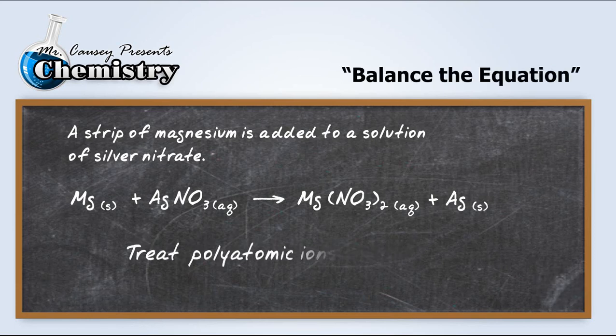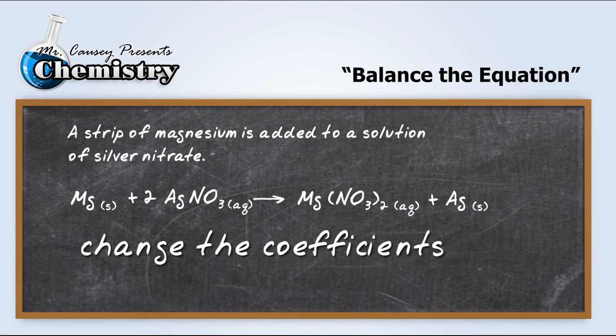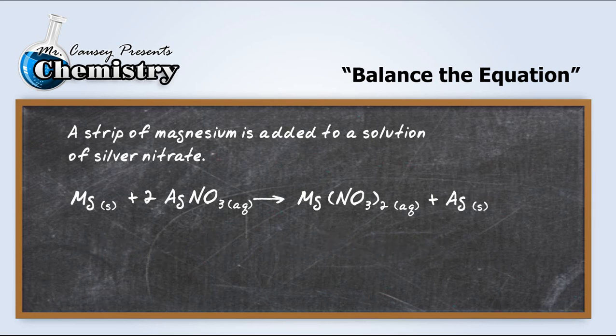Now let's balance it. Remember to treat polyatomic ions as a whole. So we have two nitrate ions and only one on this side. So we need to go ahead and make that 2AgNO3. Remember, you can only change the coefficients. You cannot change the subscripts once you write the formulas.